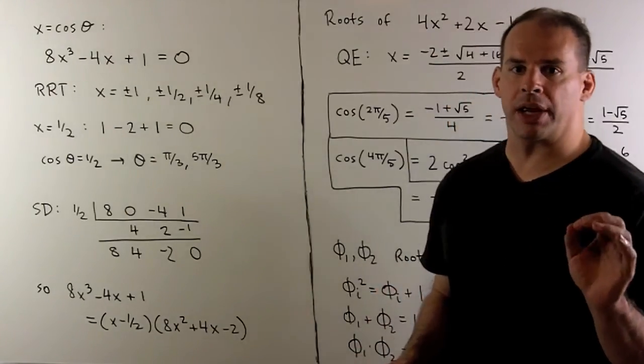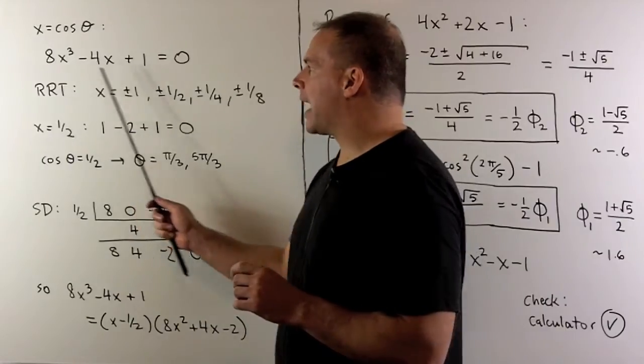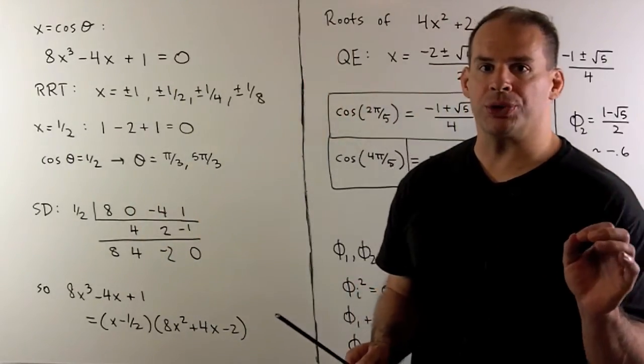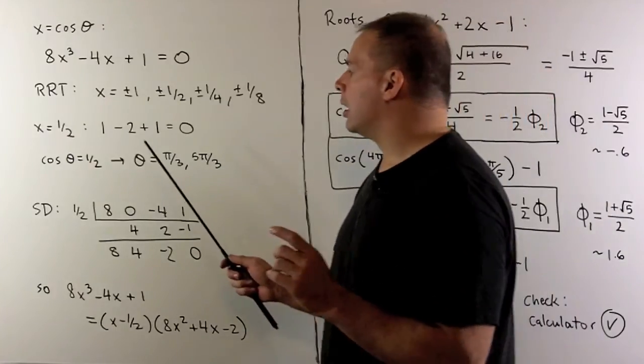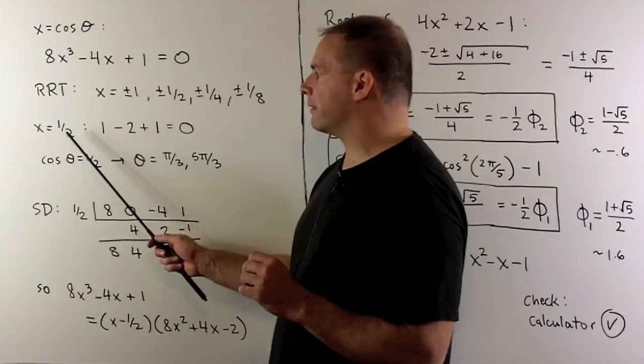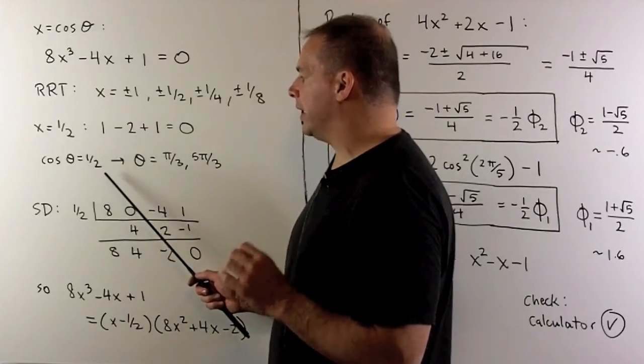If we let x be equal to cosine θ, we substitute, then we're trying to factor this polynomial. Start by applying the rational roots test. Of the potential rational roots, the only one that hits out is 1/2.